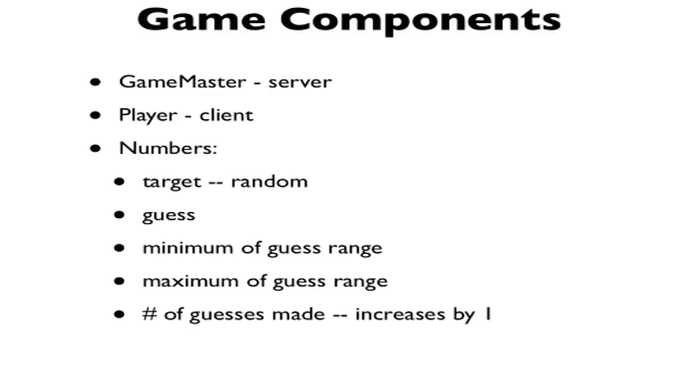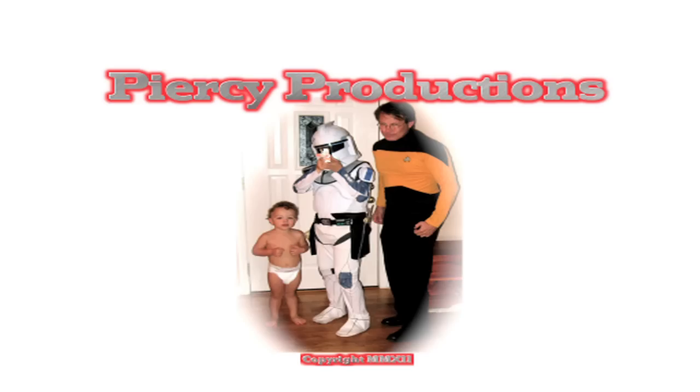Also, there's a minimum of guess range and, of course, the maximum of the guess range. Finally, there's the number of the guesses that are made. It starts with the first guess and then increases by one each time a new guess is made. So if we create a game to play the guessing game, these components we're going to have to take into account in addition to the list of steps for playing the game. This has been a Piercy Production.